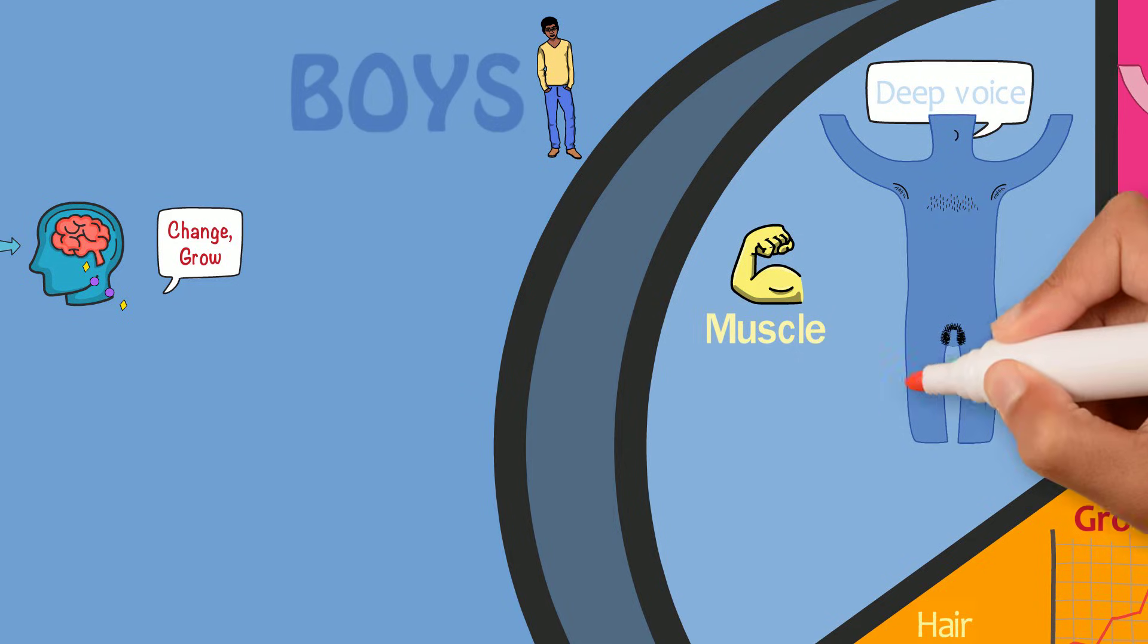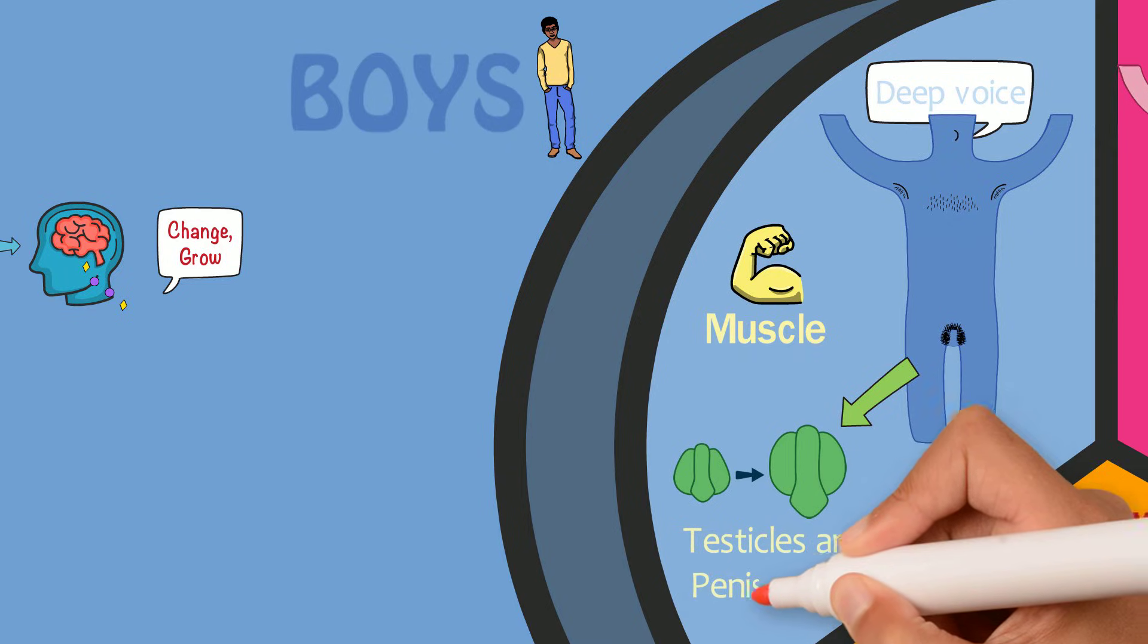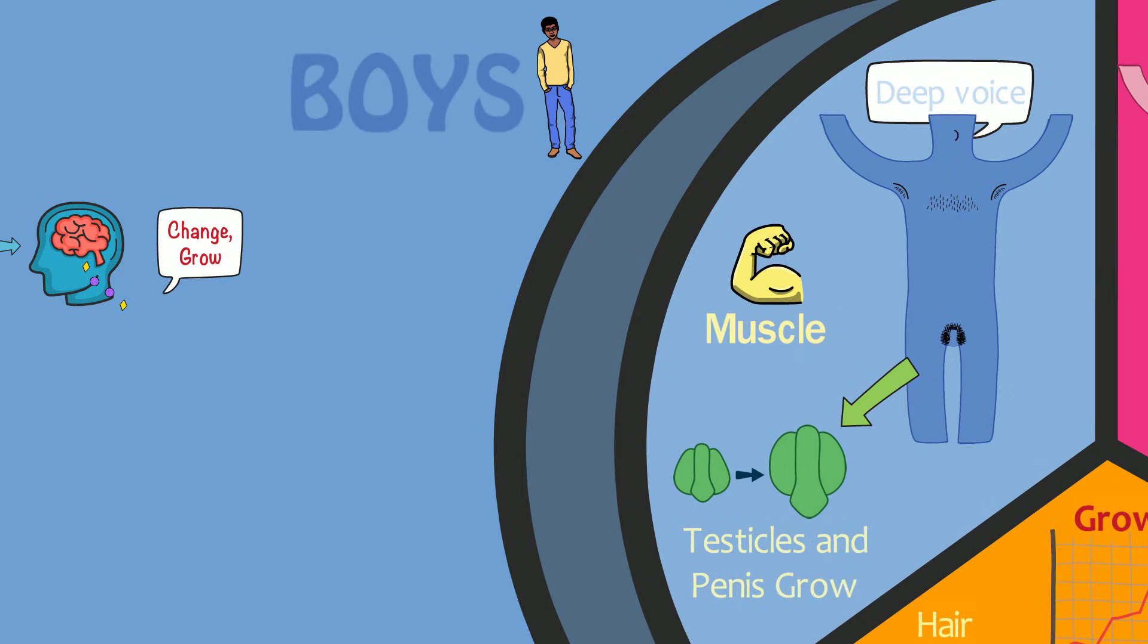The genital area will also change. Other than developing hair, the testicles will get bigger and after this, the penis will get longer and then wider. Some boys may have some breast growth as well, which will disappear after a few years.